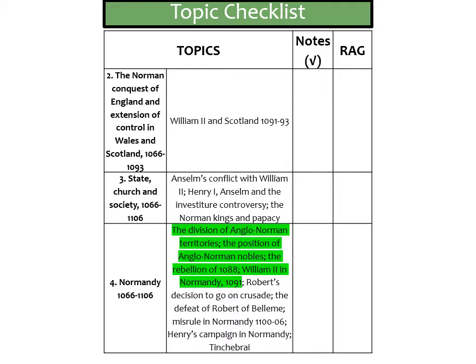Just to say where we're at with the distant learning part of the course — the parts in green are the elements we've already looked at. We've got a little bit left of the Normandy course, specifically Robert of Normandy's decision to go on a crusade. But I thought it made sense to jump back and do this small topic on William II and Scotland between 1091 and 93. Chronologically it's probably the best order. After this lesson on Thursday, instead of moving back to Normandy, we'll be looking at William II's conflict with the church, so hopefully by the end of this week we've tied up everything to do with William II.